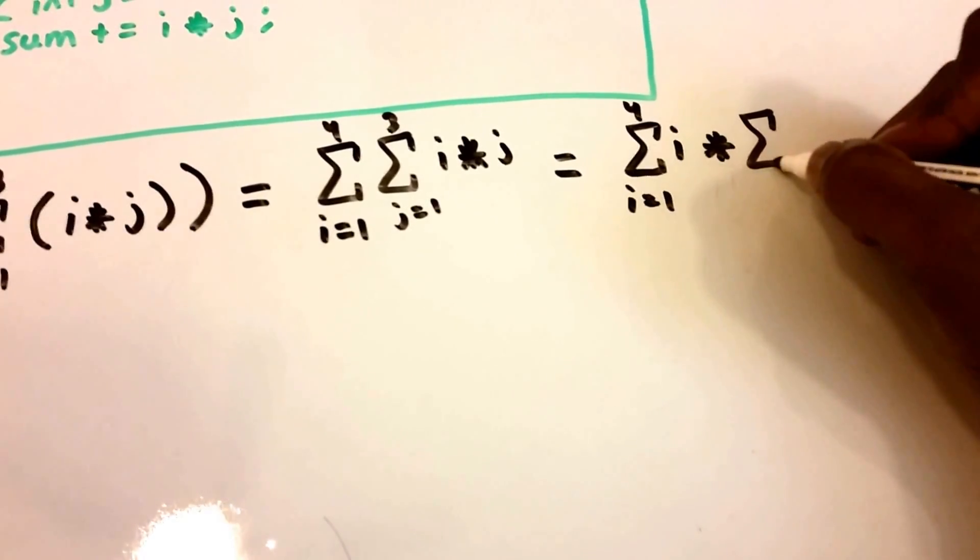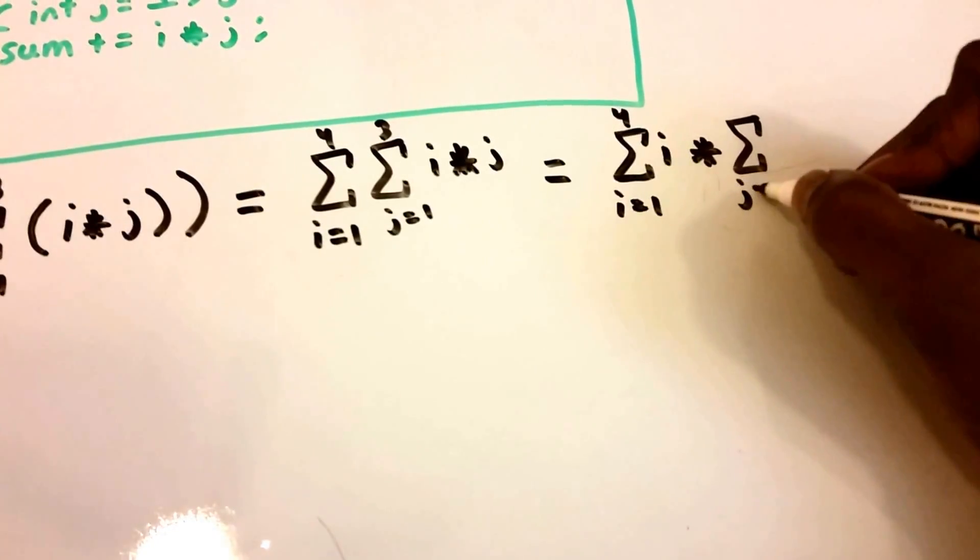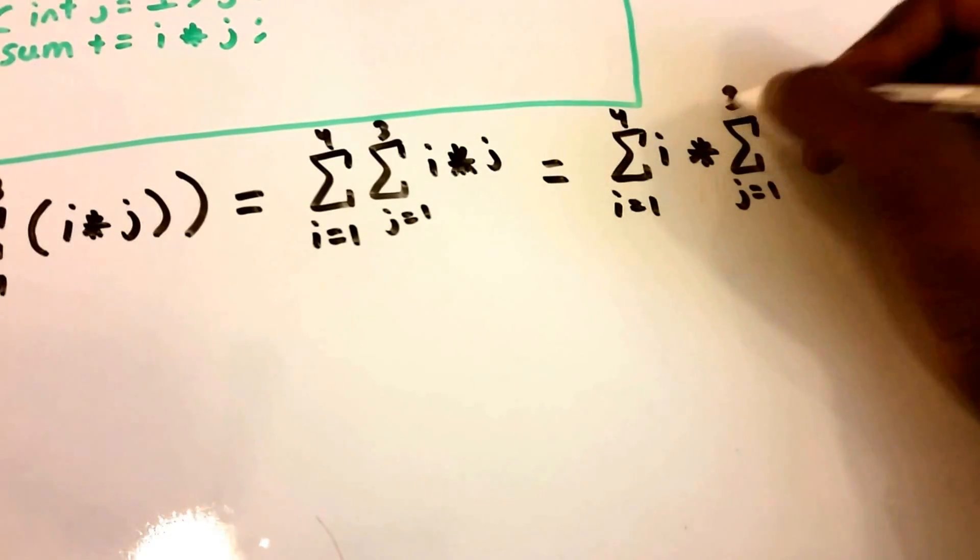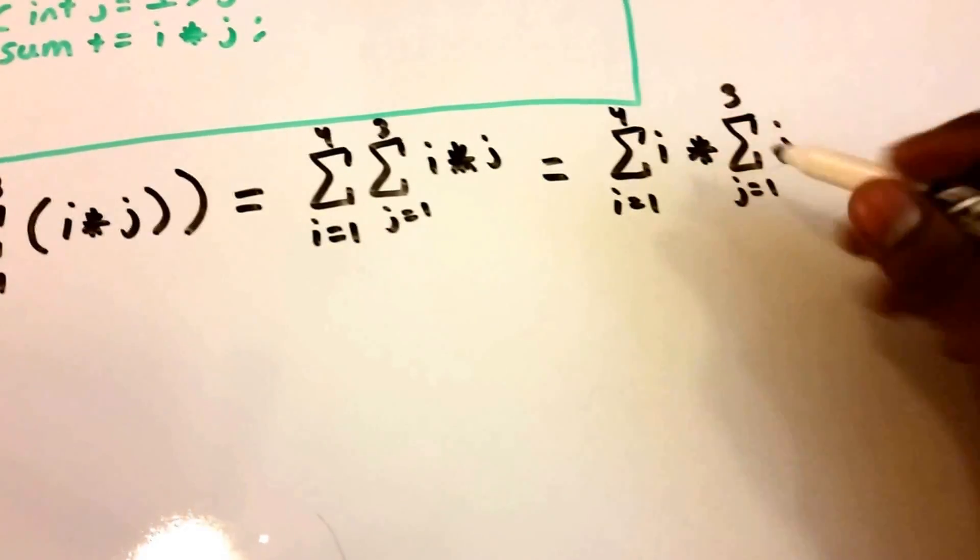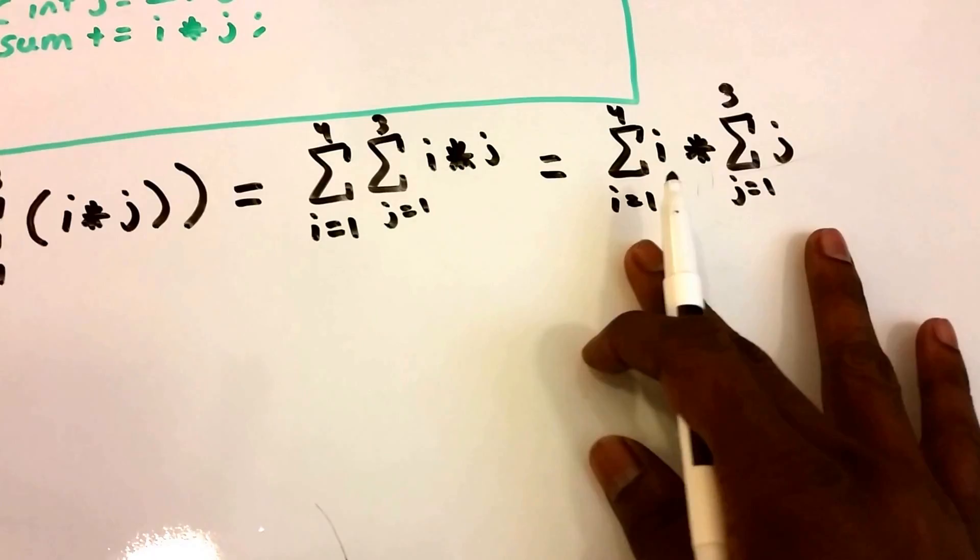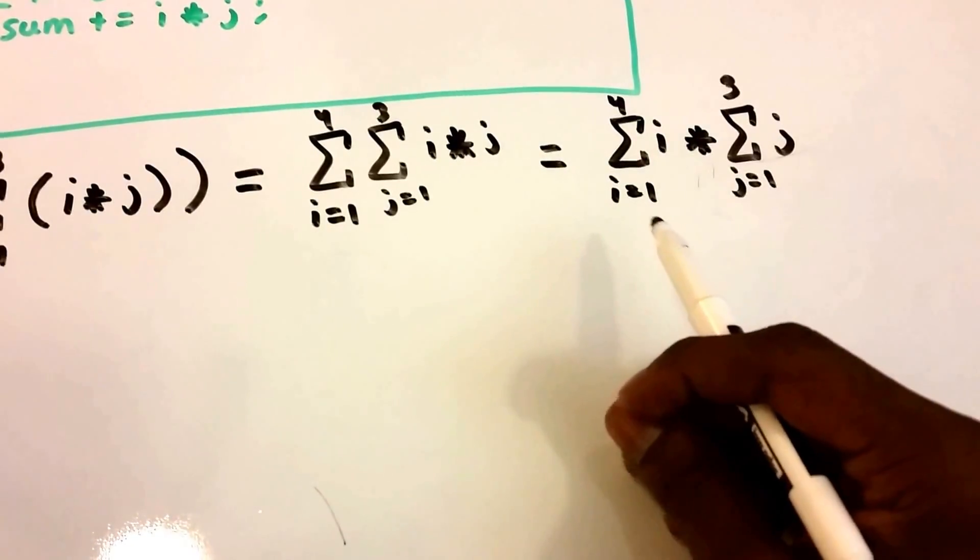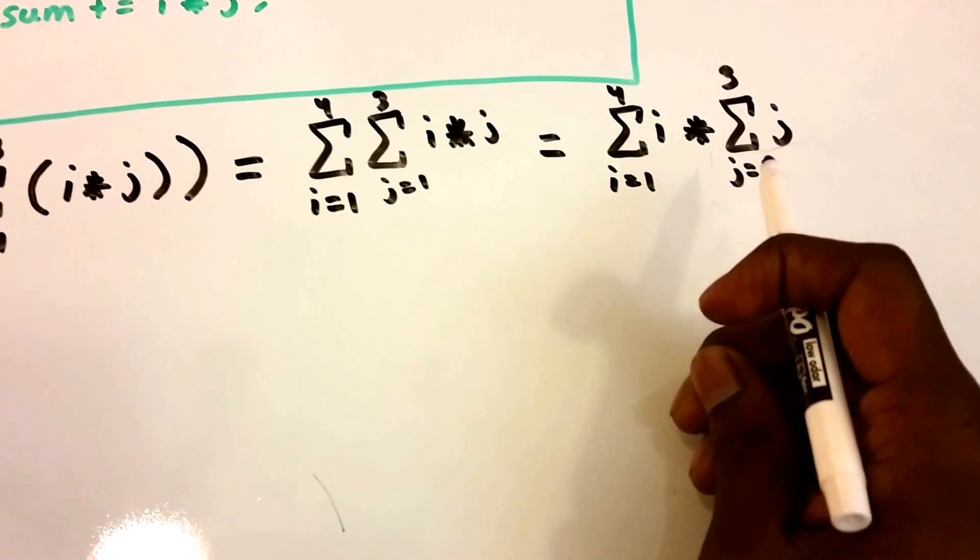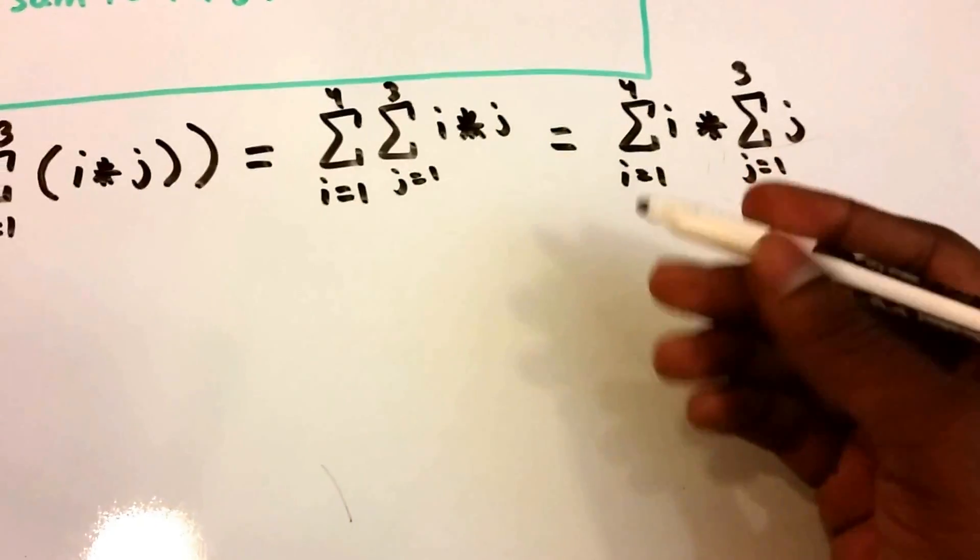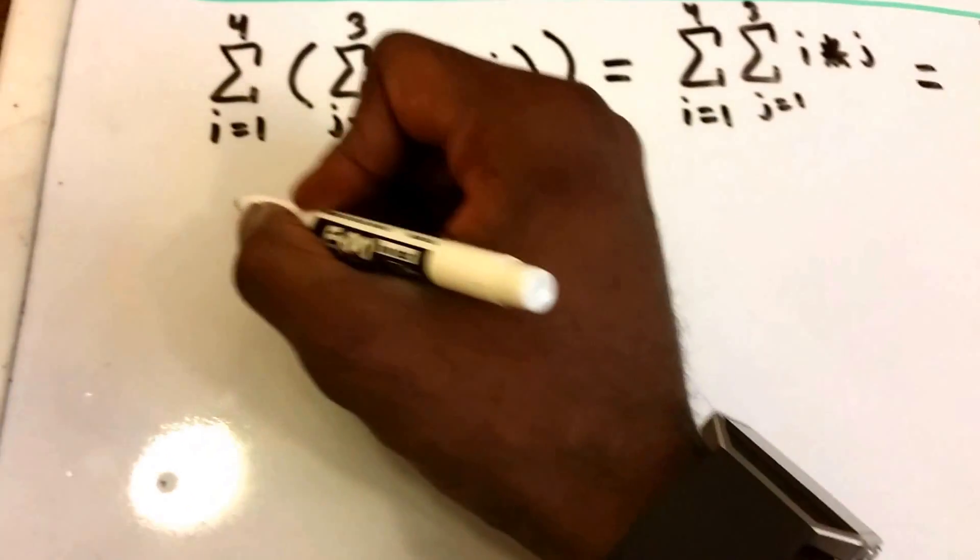Times the summation from j equals 1 to 3 of j. Okay, so now that we've rewritten it like this, we can use a formula to figure this out.